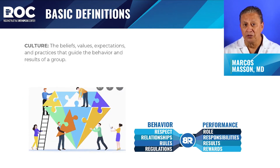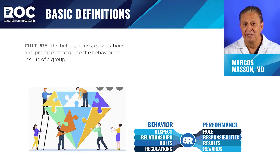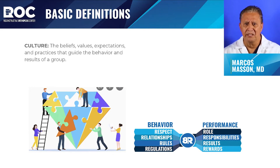Culture is the beliefs, values, expectations, and practices that guide a group's behavior, and the results of a group are the fact that they work together. Behavior and performance are divided into what we call the Eight R's: respect, relationships, rules and regulations that must be complied with by all involved. Performance is based on the individual roles of the employee, manager, or safety supervisor, and the responsibilities that each of those roles carry, the results each role expects, and the rewards we get from safety — which is essentially a lack of injury.